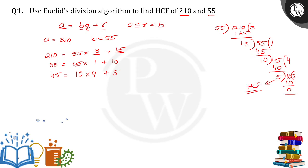In the same way, we can rewrite it as 10 equals 5 into 2 plus 0. So whenever the reminder is 0, the value of B is the HCF for 210 and 55. Thank you.